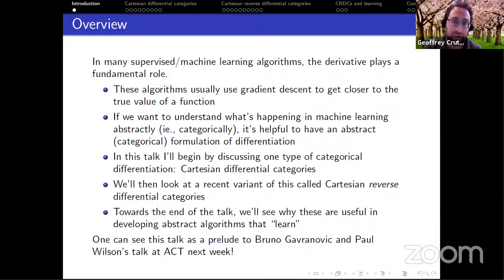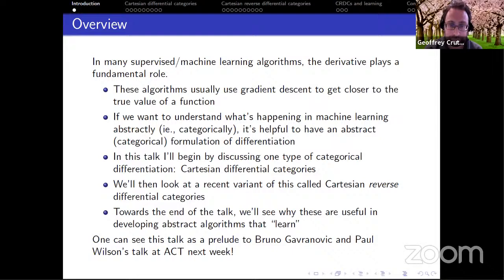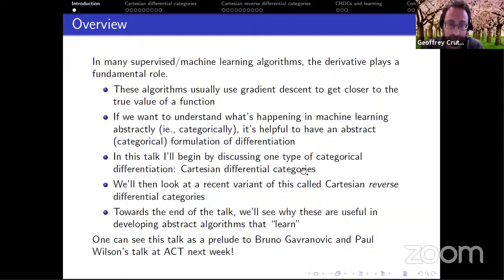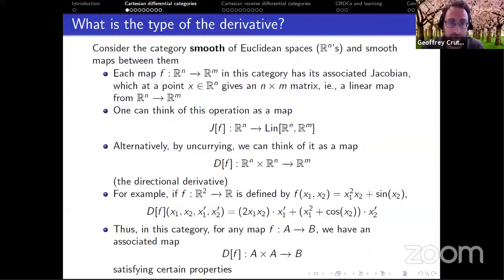At the core, a lot of these algorithms use the derivative, so if we want to understand what's happening abstractly it's helpful to have a categorical understanding of differentiation. I'll talk about Cartesian differential categories and then a variant called Cartesian reverse differential categories. Towards the end we'll see why those are useful in abstract algorithms that learn things. This is partly a prelude to Bruno Gavanovich and Paul Wilson's talk at ACT next week — they're talking about our joint work, so if you're interested, check out their talk.